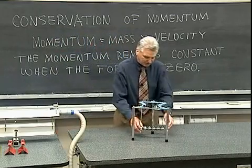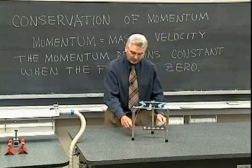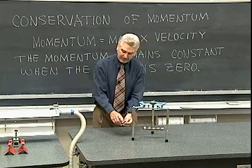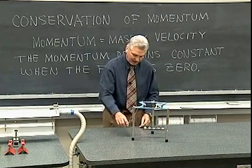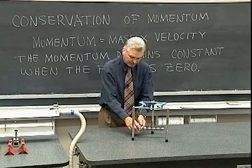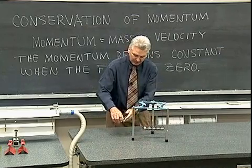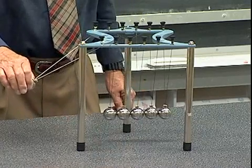Here I have some balls that can collide with one another and we're going to see what happens when a ball that has a mass m and a velocity v comes up and collides with these other four balls. One way to conserve momentum is to have the momentum pass right on through from one ball to the other and watch what happens during the collision.